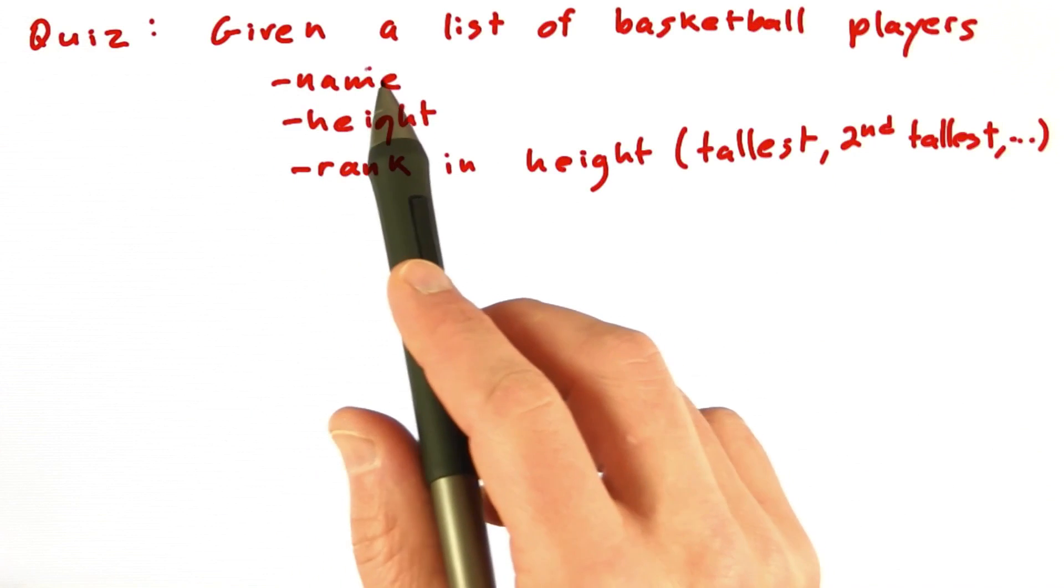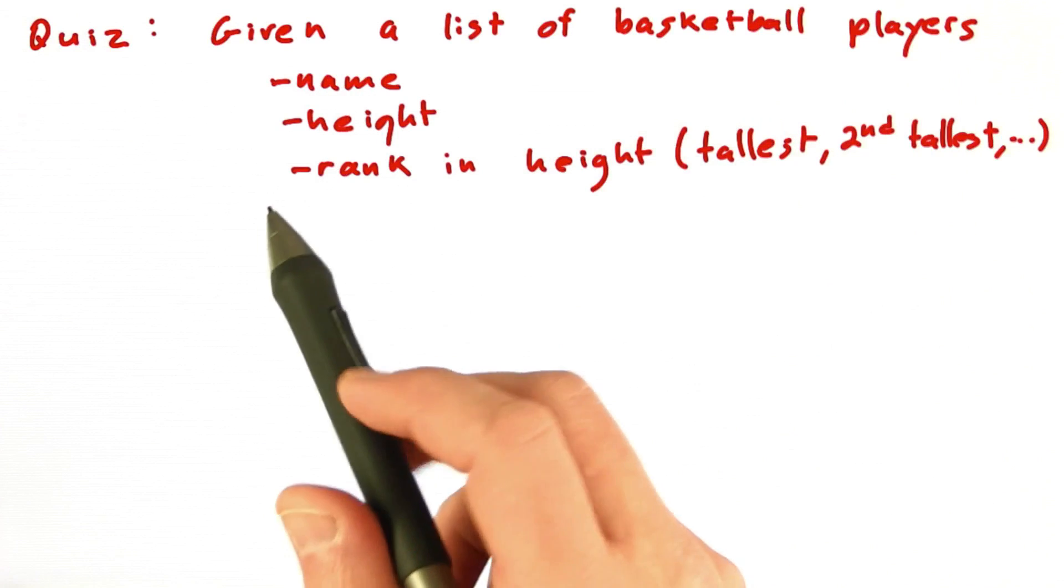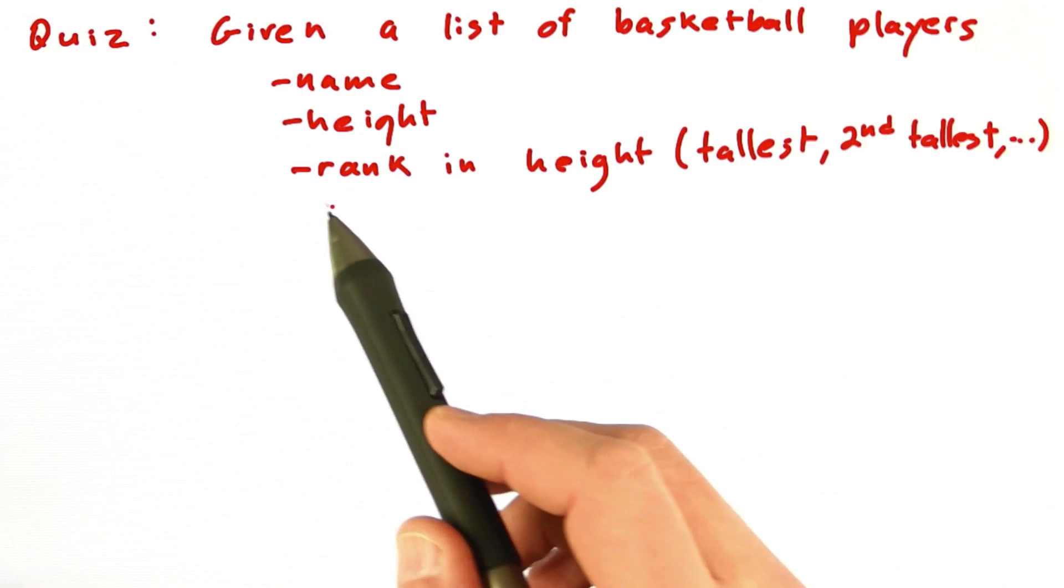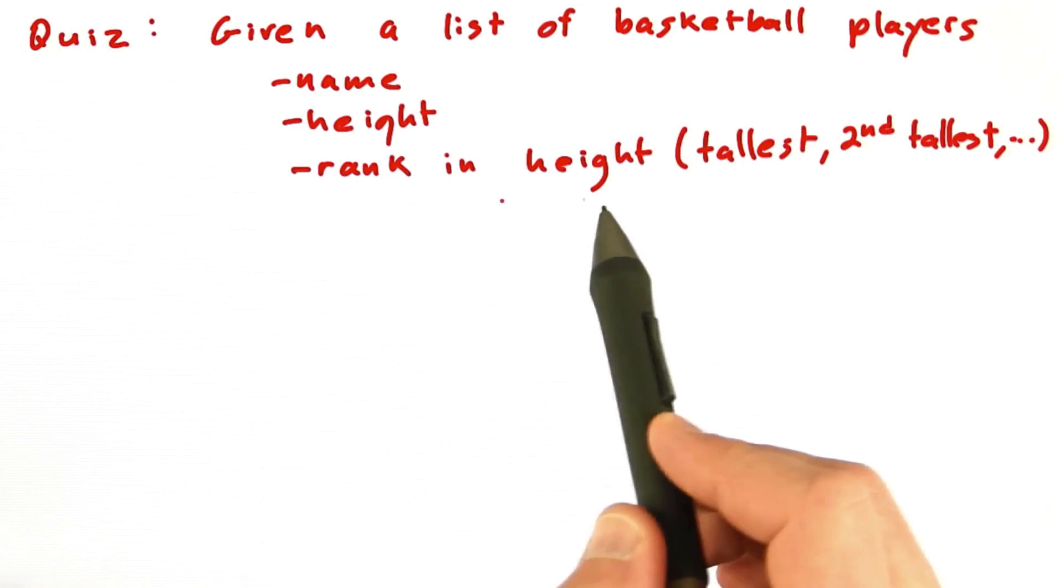Let's have a quick quiz on this. Suppose you have a list of basketball players. You've got a bunch of records, and each one has the name of the player, the height of the player, and the rank in height.